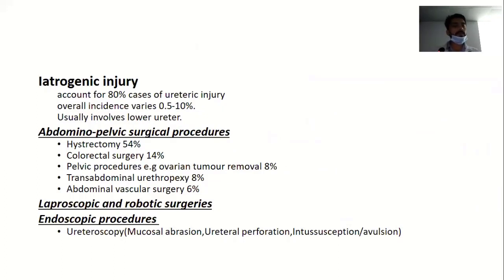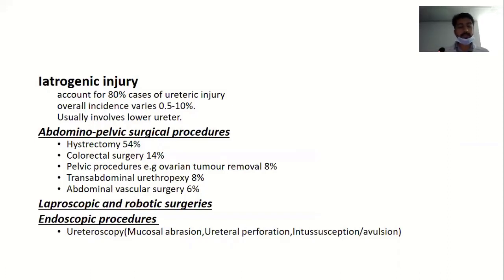Iatrogenic injury accounts for 80 percent of ureteric injury cases. The overall incidence of ureteric trauma from iatrogenic causes ranges from 0.5 to 10 percent. Iatrogenic injury usually involves the lower ureter and occurs in abdominal pelvic surgical procedures, of which hysterectomy is the most common, followed by colorectal surgery, pelvic procedures like ovarian tumor removal, transabdominal uropexy, and abdominal vascular surgery. Iatrogenic injuries also occur in laparoscopic and robotic surgeries. In endoscopic procedures, ureteroscopy is the most common cause, which can cause mucosal abrasion, ureter perforation, or avulsion of the ureter.